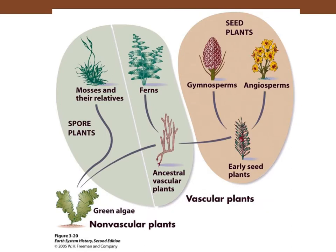The non-vascular plants include the protists and green algae, and from those descended the non-vascular plants — mosses and their relatives — and then the vascular plants, which include the ferns and their relatives, and then seed-bearing plants: the gymnosperms and the angiosperms.